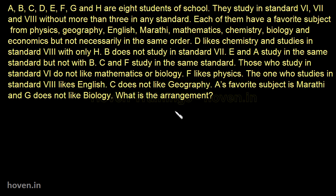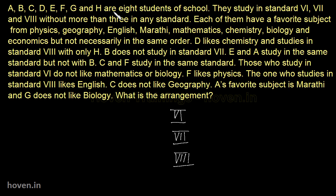So we have standard 6, standard 7 and standard 8. Each of them has a favorite subject from physics, geography, English, Marathi, mathematics, chemistry, biology and economics, but not necessarily in the same order. So basically these subjects have to be allocated to these students, and these students are also to be assigned to these sections. This is going to be the theme of this question. D likes chemistry and there are certain statements, so let us first build the table and then proceed.